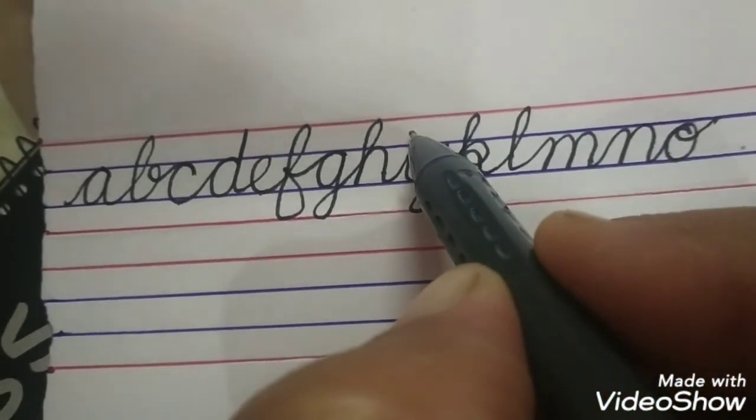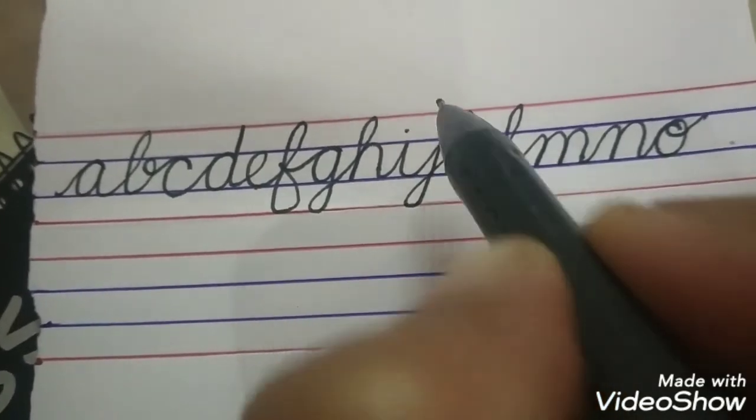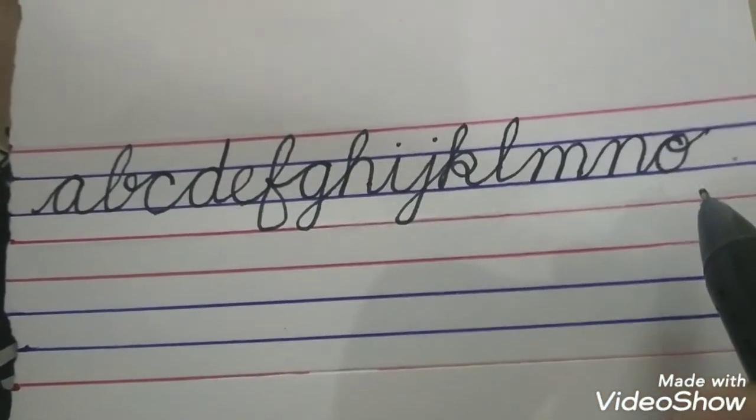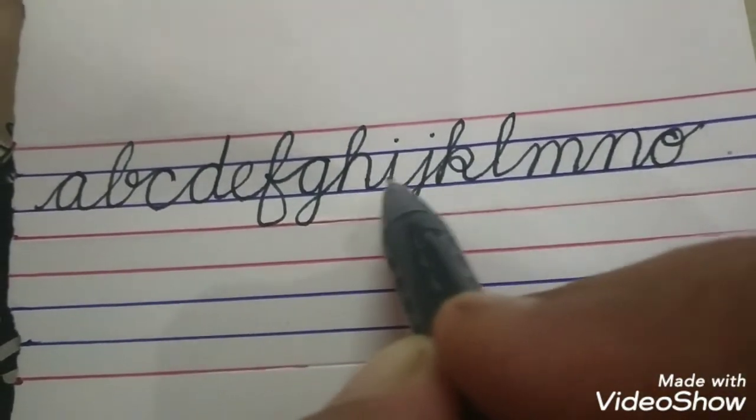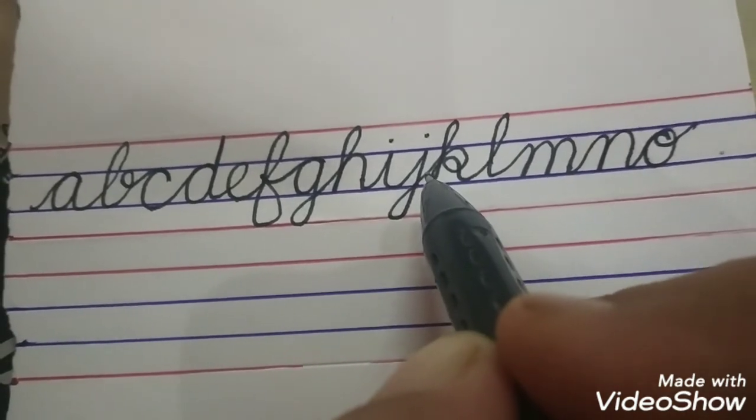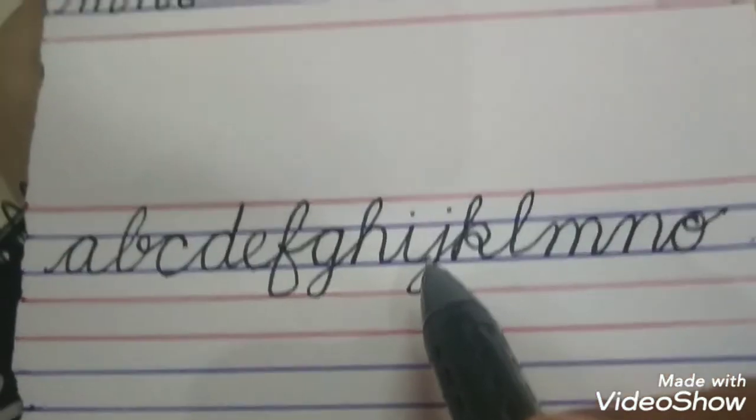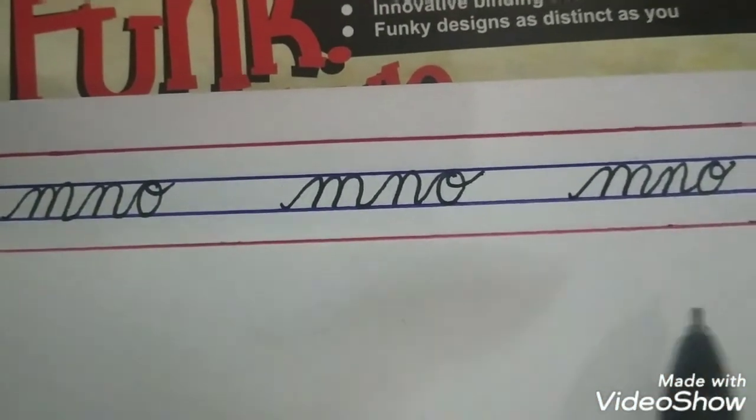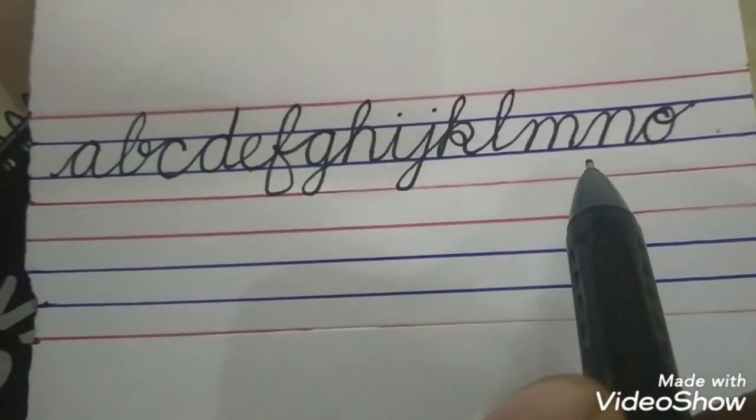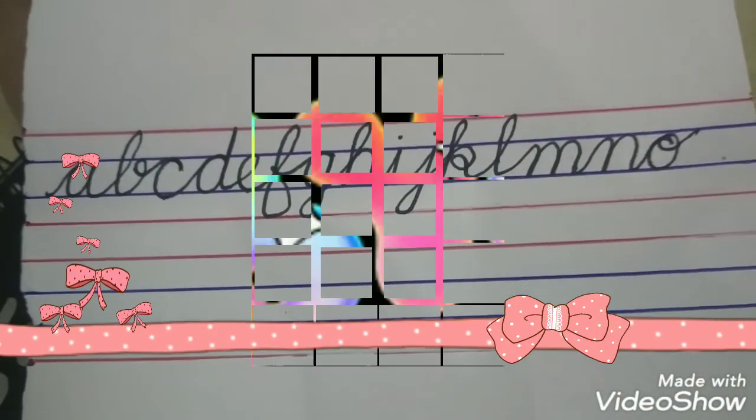Okay, the dots on i and j. Once you have completed what you were writing, after completing the whole line, we will put dots over here, right? So as usual, I want you to write one page for this and one page for this. Take care, bye bye.